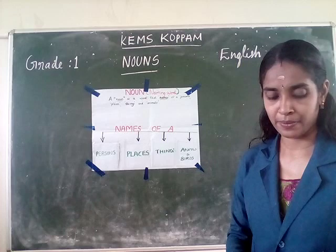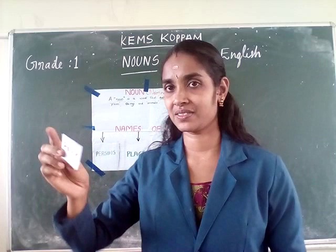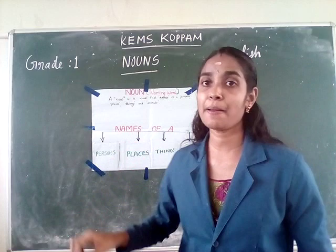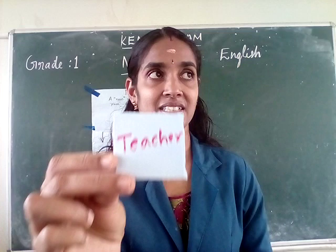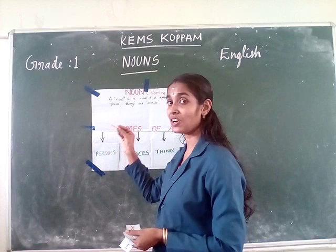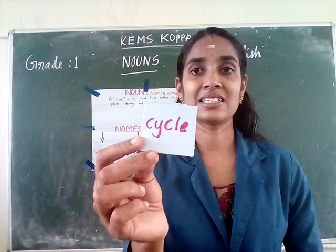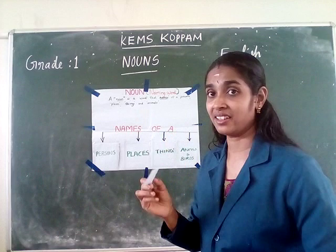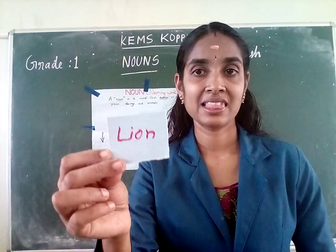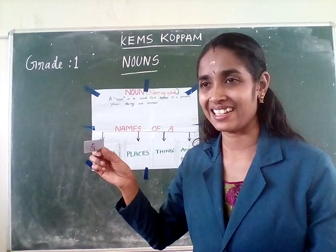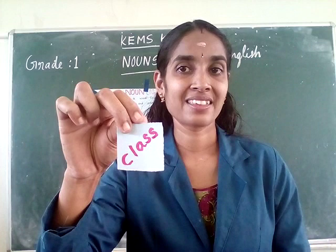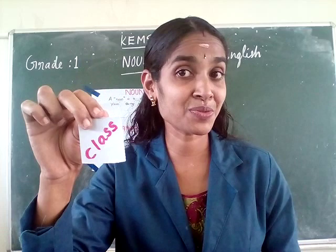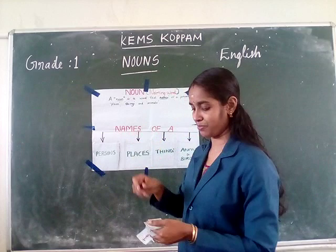Park — which box? Yes, the second box. Park is a place. Teacher — is teacher a thing? No, it's a person. So the first box. Cycle — it's a vehicle, or a thing. So the third box. Lion — which box? Yes, the fourth box. Class — it's a classroom, which box? Yes, very good — second box, it's a place.